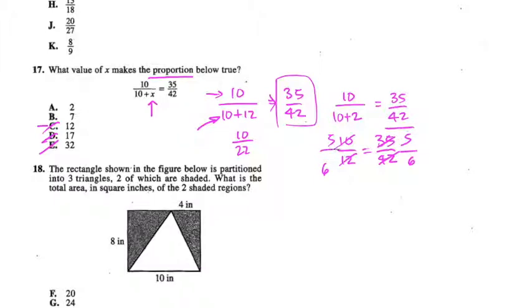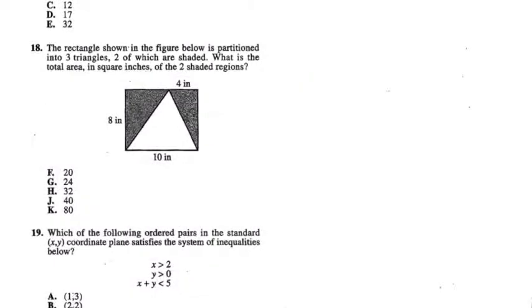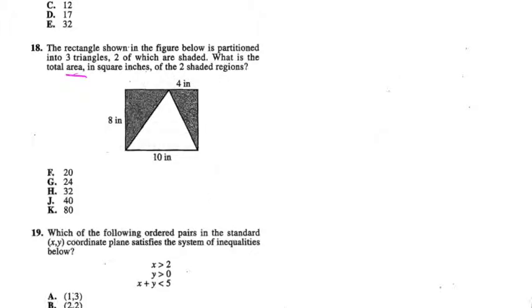Number 18 is an integrating essential skills question about area. The rectangle shown in the figure below is partitioned into three triangles, two of which are shaded. What is the total area of the two shaded regions? This is a very common question where they give you a shaded region and want you to figure out its area.